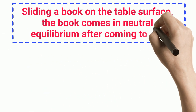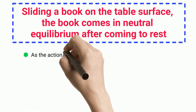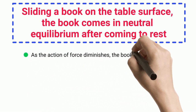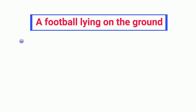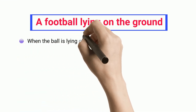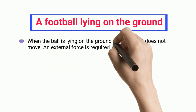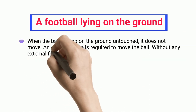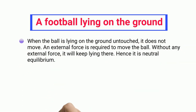Example two: sliding a book on a table surface. The book comes to neutral equilibrium after coming to rest as the action of the force diminishes. Example three: a football lying on the ground. When the ball is lying on the ground untouched, it does not move; an external force is required to move it.